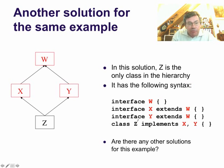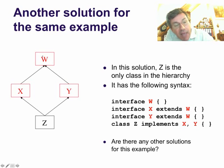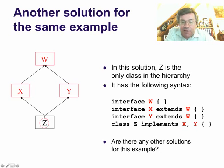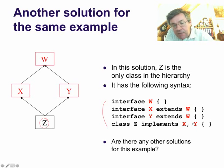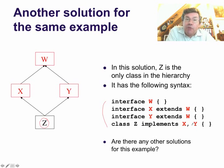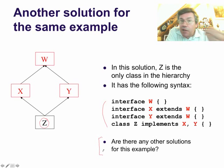Here's another solution. In this other solution, X, Y, and W are all interfaces, and there's only one class in the whole hierarchy, which is Z. So this has the following syntax: interface W; interface X extends W; interface Y extends W; and class Z implements X and Y. This is another solution to the diamond example. Can you come up with any further solutions — any other patterns of classes and interfaces that will solve this problem?